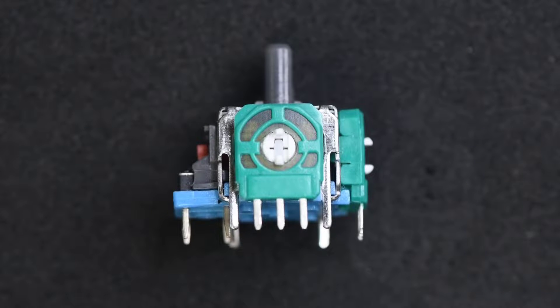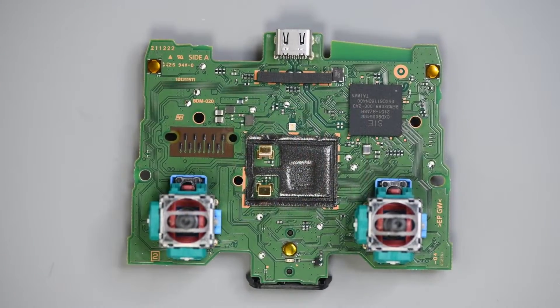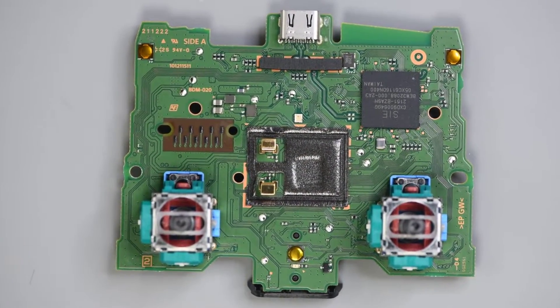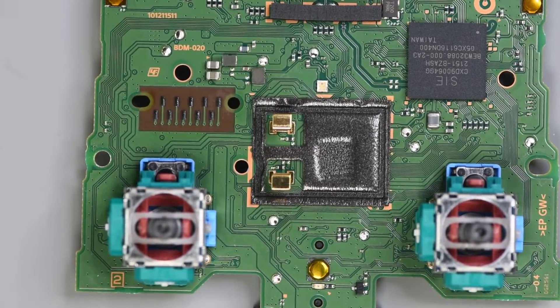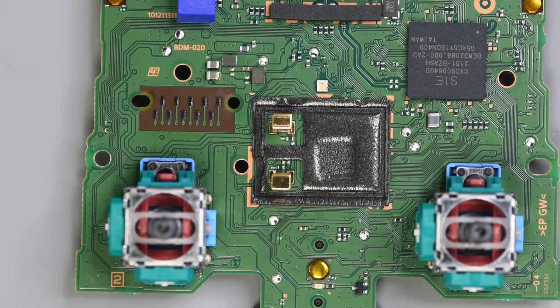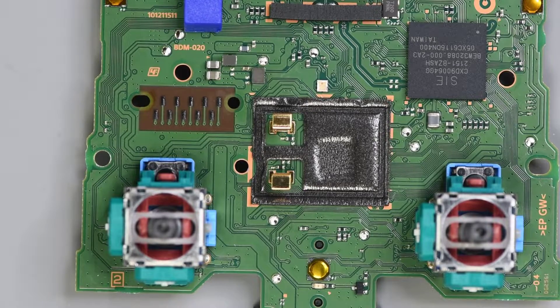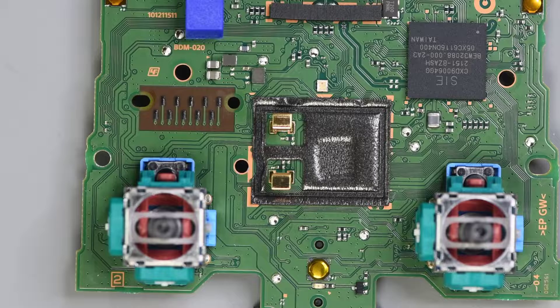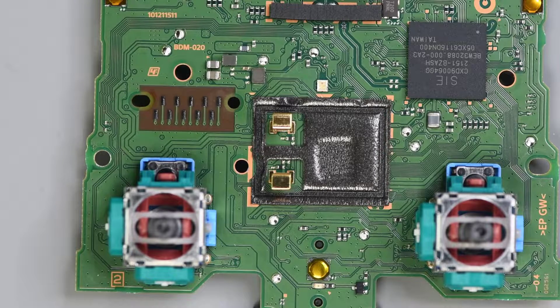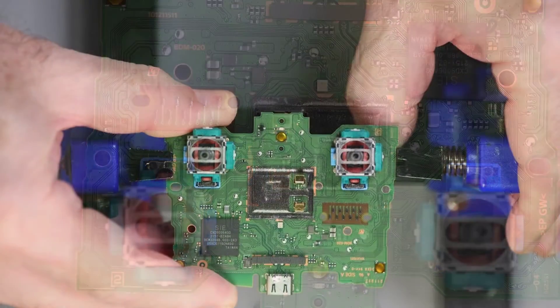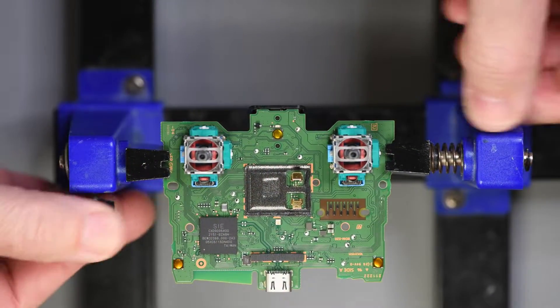Most of the time, the problem with the joystick module is going to be drift. And that doesn't require replacing the entire joystick module. You can just replace the potentiometer that's causing the problem. What I have here is a DualSense version 2 board, and the left stick is drifting. To be more precise, the left stick is drifting to the left. Up and down work fine. And the joystick modules on this board are made by Alps.